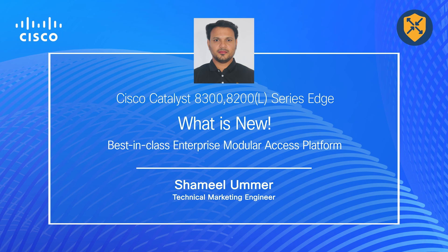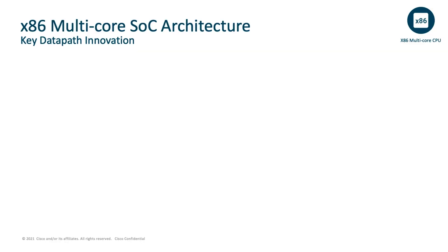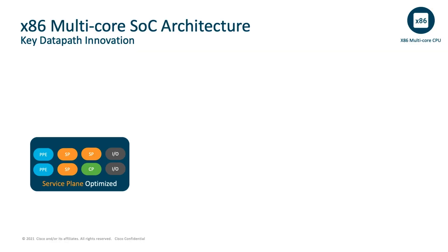We will get into a little more technical detail on these new innovations. The technology innovations come from what business demands and forecasts for the current and future growth of the network infrastructure. All these platforms are built on x86 system-on-chip architecture. If you know about the ISR 4300 series architecture, the same has been inherited to the Catalyst 8300 and 8200 series.